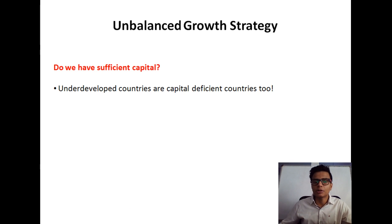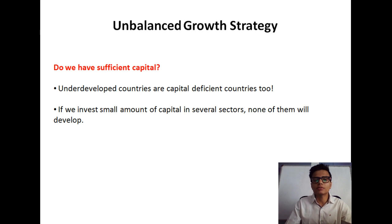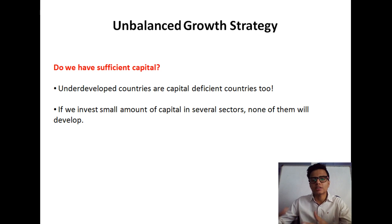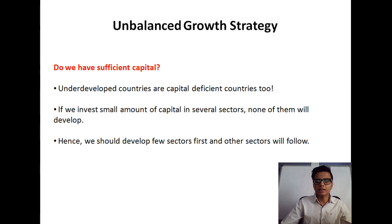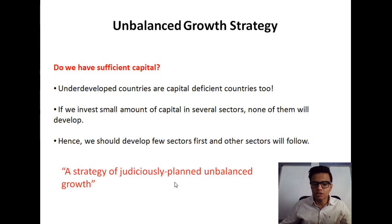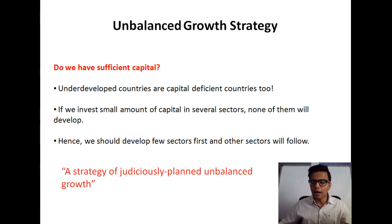Underdeveloped countries are capital deficient countries. The proponents of this strategy say that if we invest a small amount of capital in several sectors, none of them will grow or develop. So we should prioritize — we should develop a few sectors first, and then other sectors will follow. In a way, this is a strategy of judicially planned unbalanced growth.